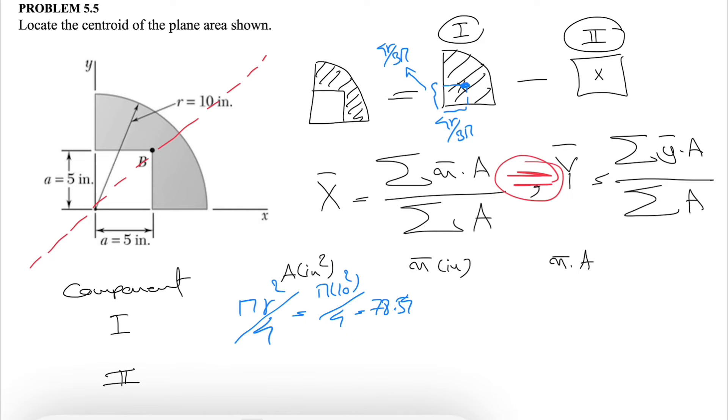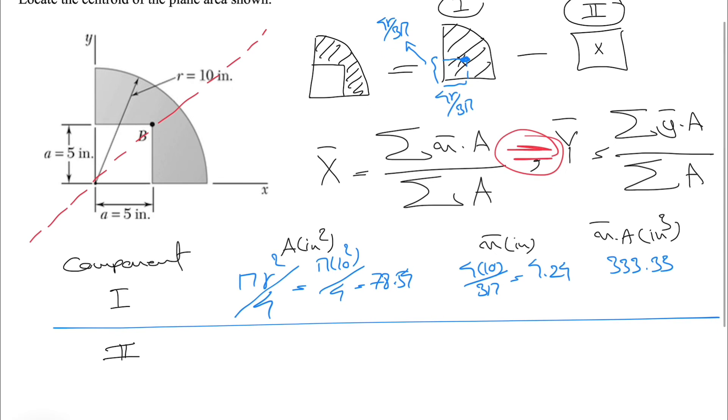For the x, we know that this will be our centroid, and for finding this we simply have 4 times r divided by 3π. That will be the same scenario for y. As I mentioned earlier, we don't need to do both because of the symmetry. We have 4r divided by 3π, so we simply have 4 times 10 divided by 3π. If we calculate this, we'll get 4.24. The last one, we just need to multiply these two, and we'll get 333.33.